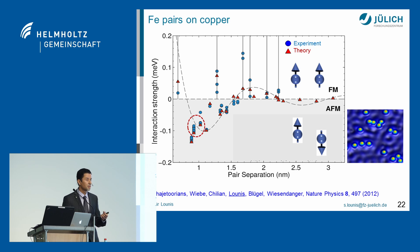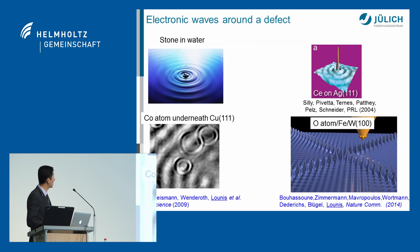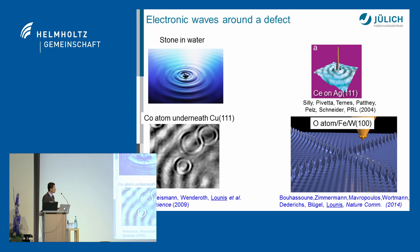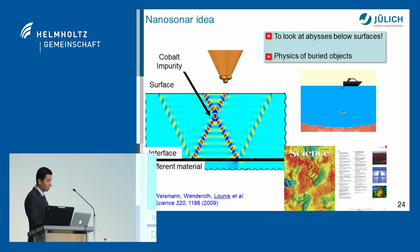These ripples are important, and we found them to be not always isotropic as when you throw a stone in water. In some cases there is a focusing of electronic waves in well-defined directions. This led us to think of a nanosonar device: a defect underneath the surface focuses electronic waves, which can be used to detect hidden objects and defects, and analyzing them reveals electronic and magnetic properties. This is made possible because these materials have a Fermi surface — the highest occupied electronic states — that acts as a lens focusing electrons in defined directions.